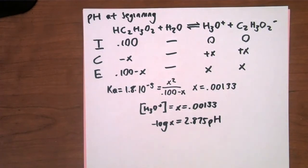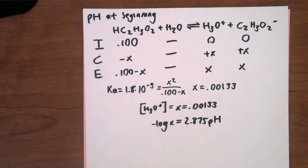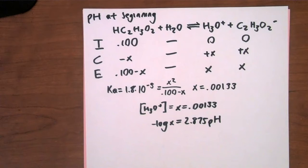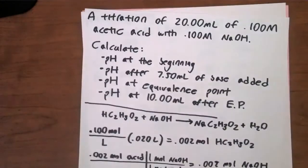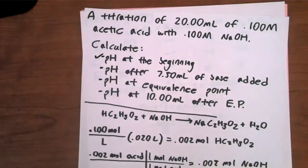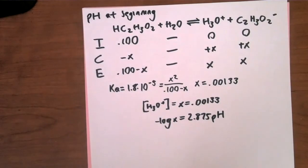Starting at a pH of 2.875 — highly acidic — and adding 0.1 M NaOH, which is in the pH 10–11 range, the pH is going to go up because we're approaching that more basic value. So now we've solved pH at the beginning. The next part: pH after 7.5 mL of base has been added.